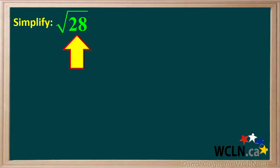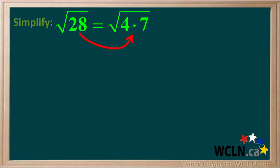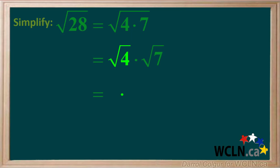Let's do an example. You're asked to simplify the square root of 28. 28 can be factored to 4 times 7. You can break up the square root of 4 times 7 to the square root of 4 times the square root of 7. 4 is a perfect square, and the square root of 4 is equal to 2.